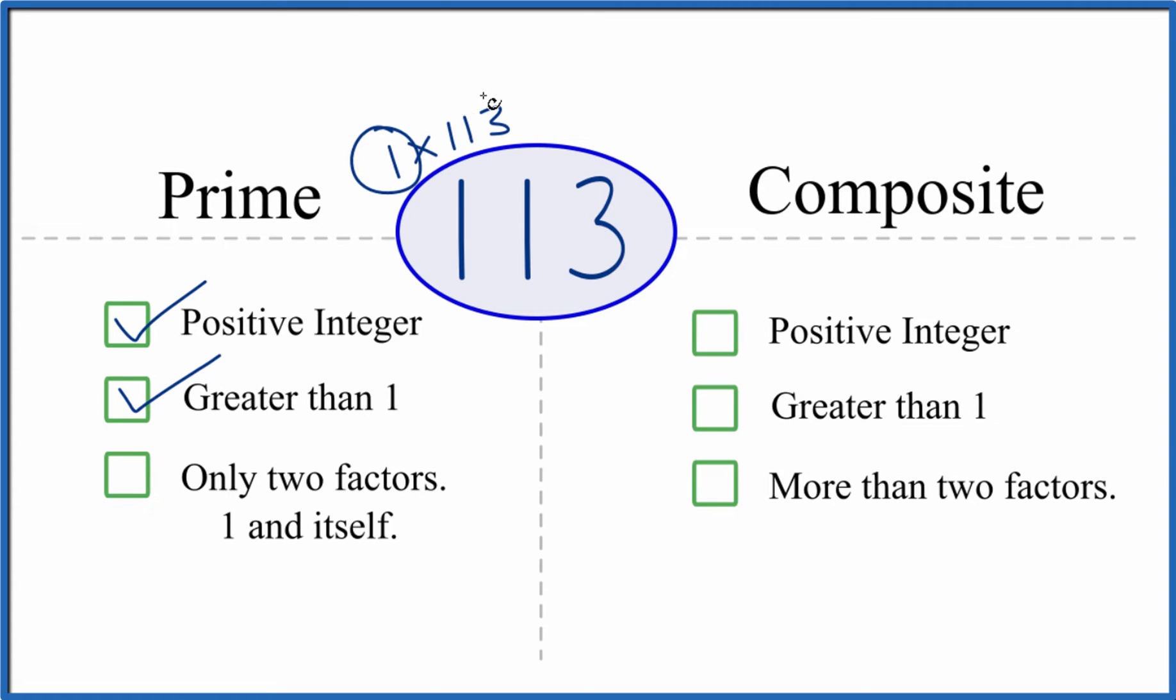So there are only two factors that divide evenly into 113. Therefore, 113 is a prime number.